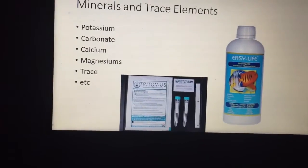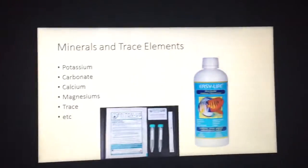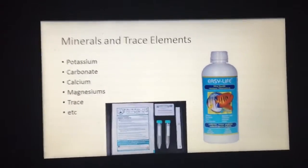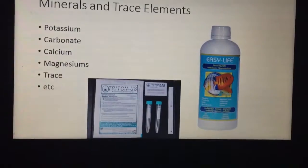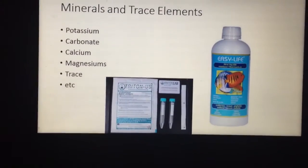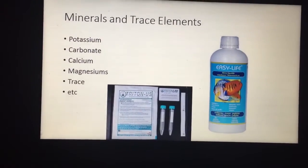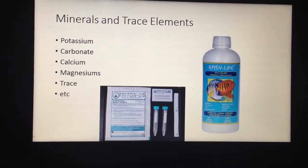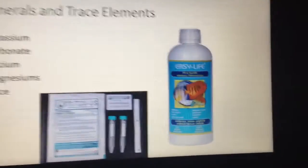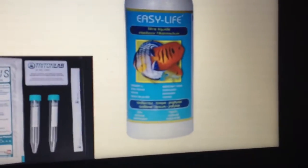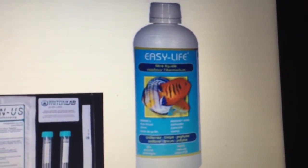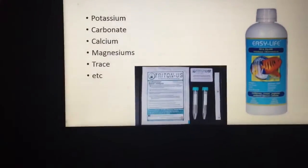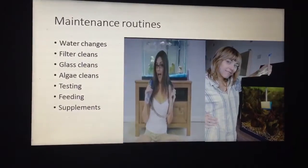There are various minerals and trace elements that can also help fish breed. The ones to consider include potassium, carbonate, calcium, magnesium, and other trace elements — these can definitely help fish breed. Also, putting a positive charge in the water with Easy Life can also help stimulate various fish to breed.